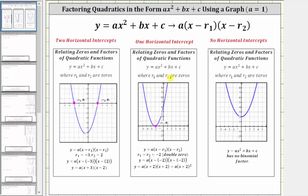Therefore we let r sub one equal r sub two, which in this case would be negative two, giving us two of the same binomial factors. The third case is we have no horizontal intercepts, and therefore we have no binomial factors.